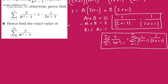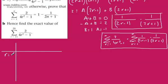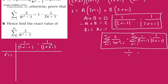Let's do a little table. Taking r equal to 1, we feed into 1 over 2r minus 1 and subtract 1 over 2r plus 1. When r equals 1, we get 1 over 1 minus 1 over 3, giving us 1 minus 1 third. When r equals 2, we get 1 over 3 minus 1 over 5.